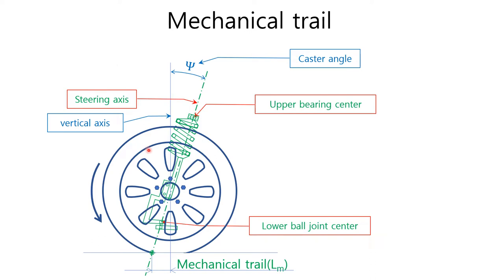Let's find out the steering axis. We have a strut assembly here. This is a McPherson strut with a spring and a shock absorber, and we have a knuckle assembly here, and we have a lower arm, and this is a ball joint. In the case of a McPherson strut, the bearing of its upper part is mounted to the body, and its lower part is mounted on the knuckle assembly, and this knuckle is mounted to the ball joint attached to the lower arm. The steering axis is a straight line passing through both the bearing center here and the ball joint center here. This is a straight line, because the steering rotates about this axis.